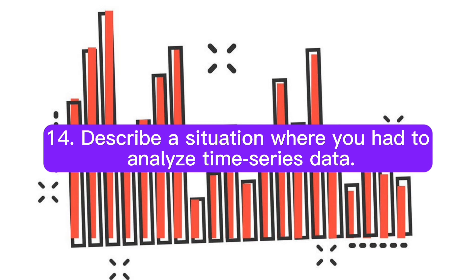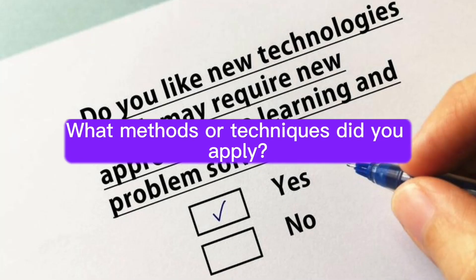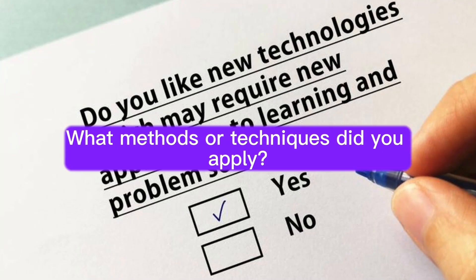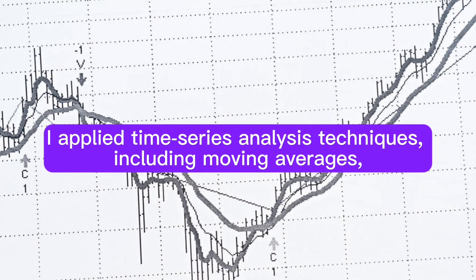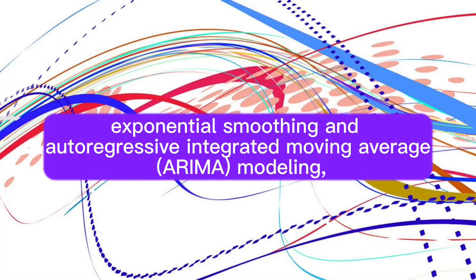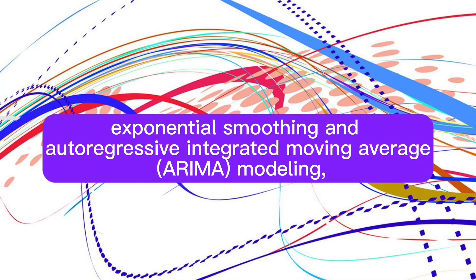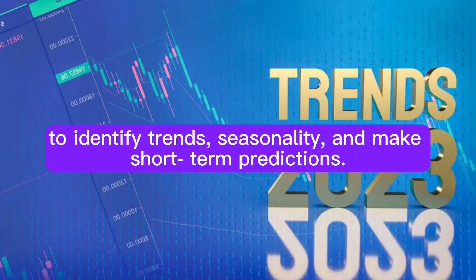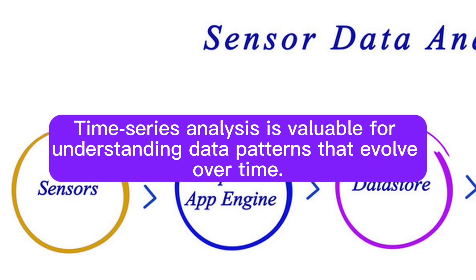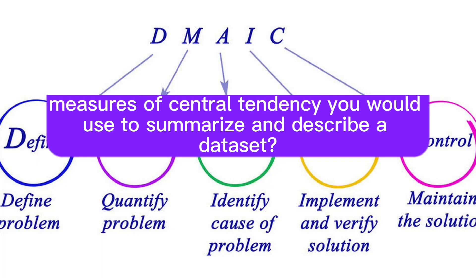Question 14: Describe a situation where you had to analyze time series data. What methods or techniques did you apply? Answer: I worked on a project involving the analysis of stock price data over time. I applied time series analysis techniques including moving averages, exponential smoothing, and autoregressive integrated moving average or ARIMA modeling to identify trends, seasonality, and make short-term predictions. Time series analysis is valuable for understanding data patterns that evolve over time.